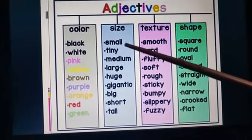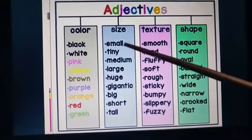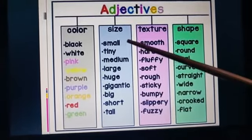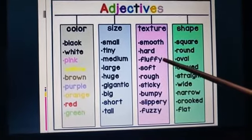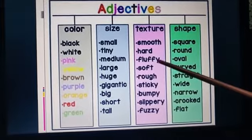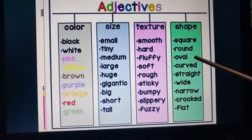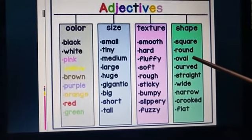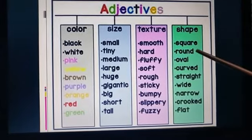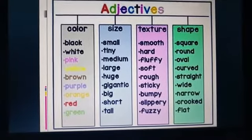Next is for size: the size of my pen is small, so small is an adjective. Next example: my mother is having fluffy hair, so fluffy is an adjective. My brother is having a square chessboard, so square is an adjective. These are all examples of adjectives.